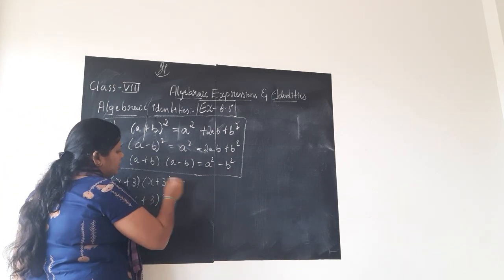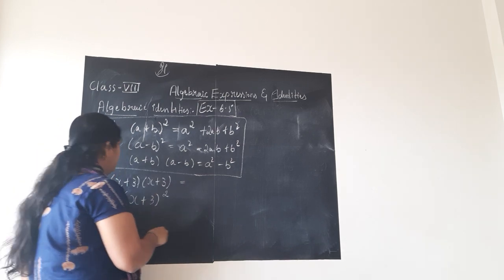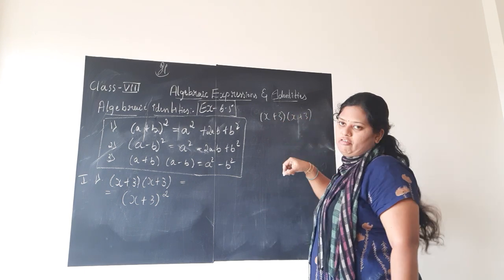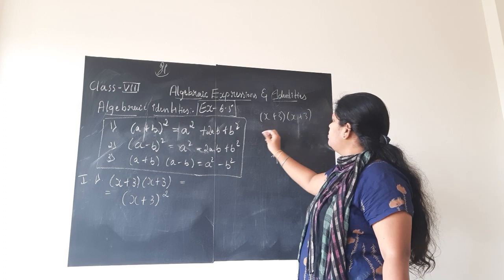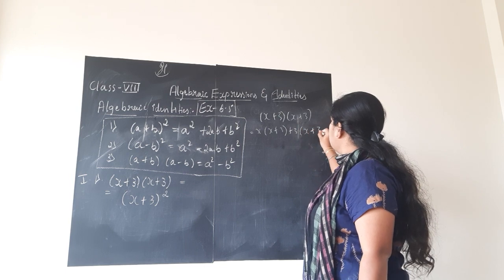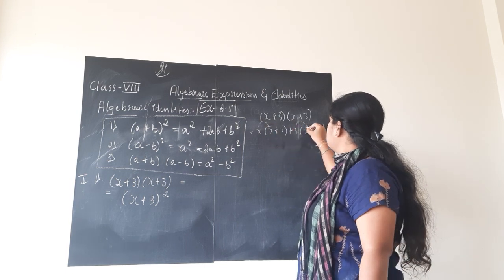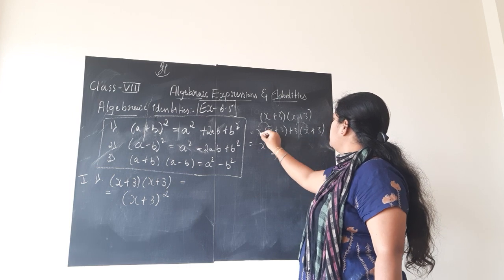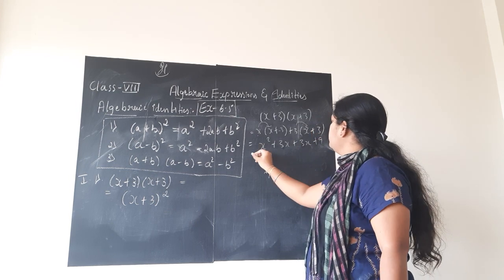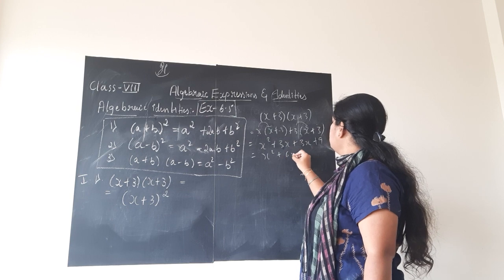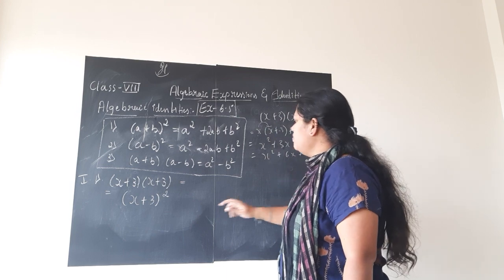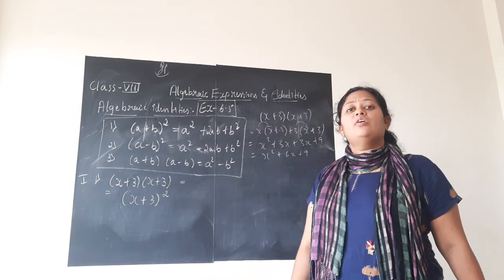If you are not understanding how, I will show you. Roughly: x plus 3 into x plus 3 — multiplication of binomial with binomial. First term: x into x plus 3, plus 3 into x plus 3. That gives x squared plus 3x plus 3x plus 9, which is x squared plus 6x plus 9.